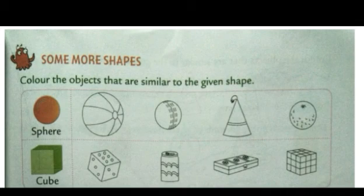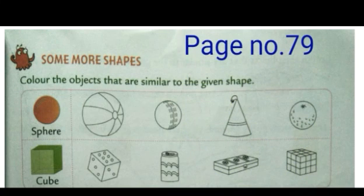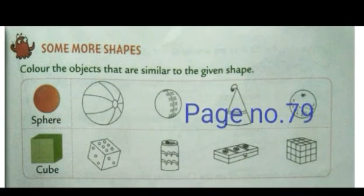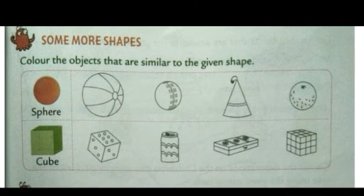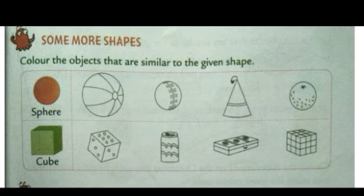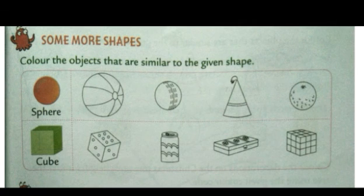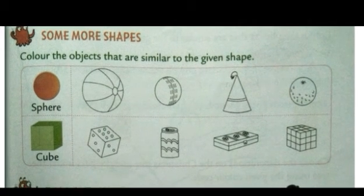So scholars, now we move on to our next page — page number 79, Some More Shapes. We have already studied about the different types of shapes in part one: cube, cuboid, cylinder, sphere, cone, etc. Now let's do some exercises based on these shapes.